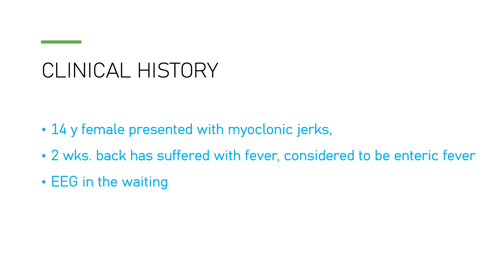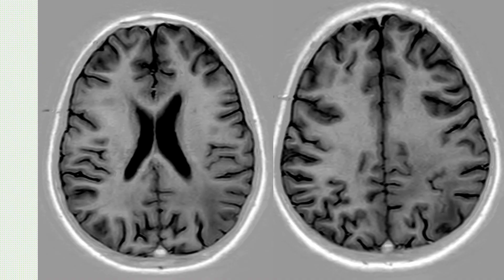A fourteen-year-old female presented with myoclonic jerks. Slight drowsiness is also there, but the predominant presentation is myoclonic jerks. Two weeks back she suffered with fever — COVID negative. It was considered to be enteric fever based on the laboratory investigations. An EEG has been ordered based on these jerks, but it is still waiting while we did this MRI.